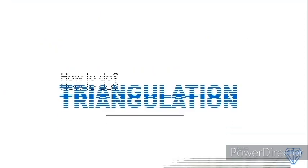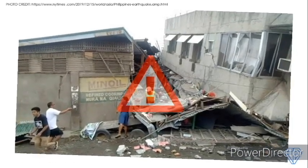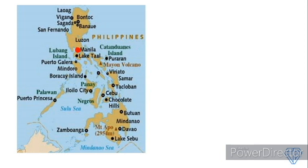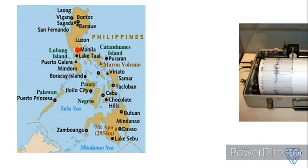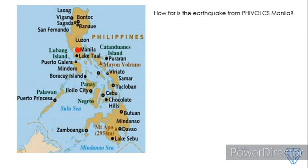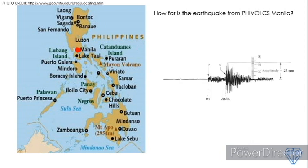So how do you do triangulation? Let's say there was an earthquake in the Philippines and we want to know the location of the earthquake. The first thing you need is a map and a seismic station. A seismic station is the place where you have a seismograph — let's say in Manila. The first question is: how far is the earthquake from PIVOX Manila? You need to answer this before knowing the earthquake epicenter. To answer this question, you need the seismogram.